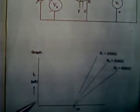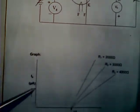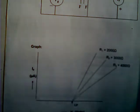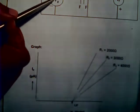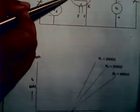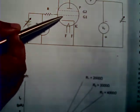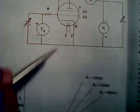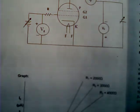And the grid voltage, that is Vg, which is basically between G1 and cathode, is taken along the x-axis.